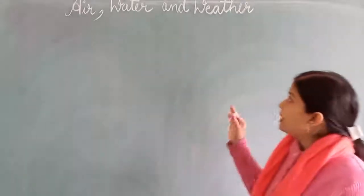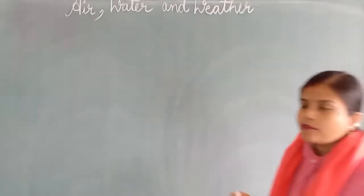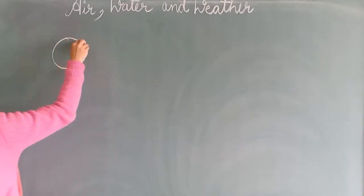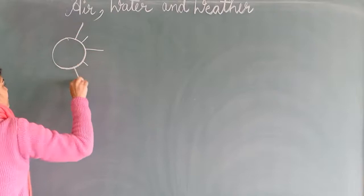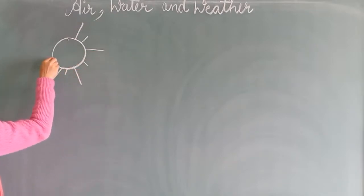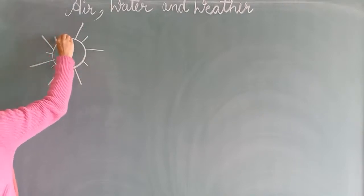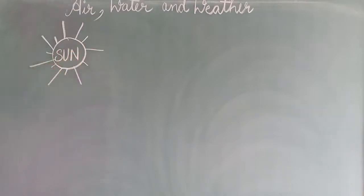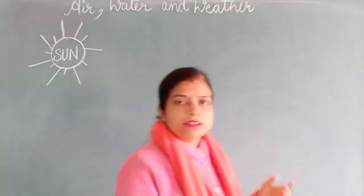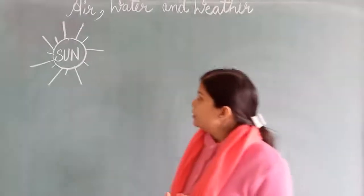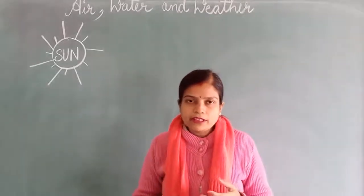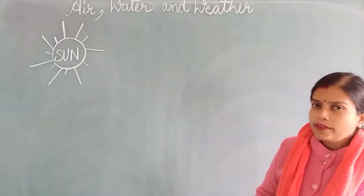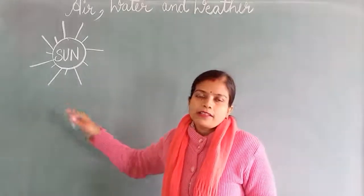The main factor of weather is the sun. The sun is the only main factor that changes and controls the weather of any area. Due to the sun, winds flow, clouds form, evaporation happens, and then precipitation. So all weather factors depend upon the main factor, which is the sun.